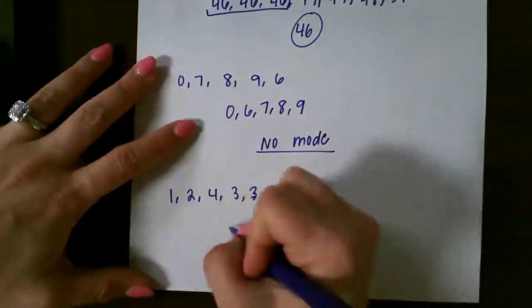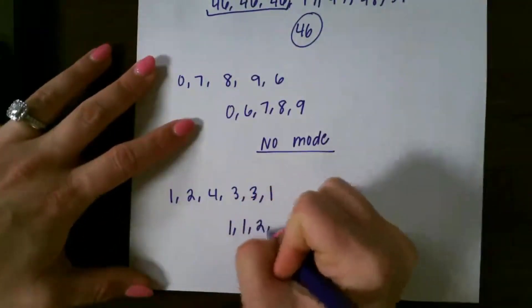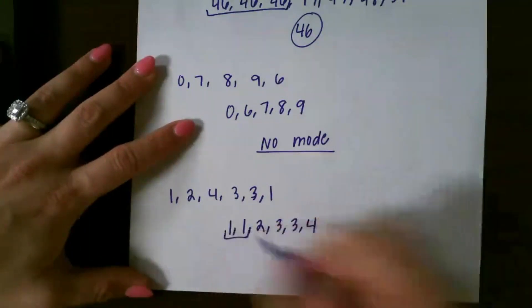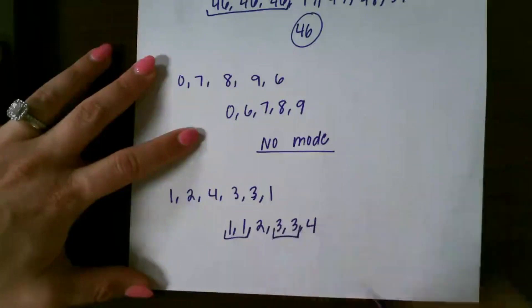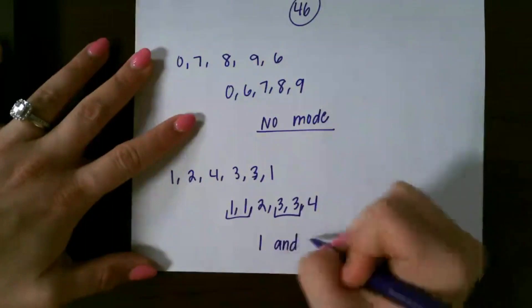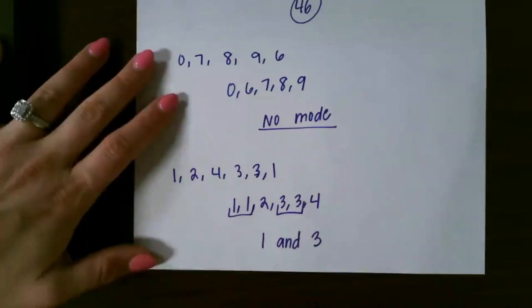And on the last one, again, least to greatest. On this one, one shows up more than once, and three shows up more than once. And they show up the same amount, so my modes would both be one and three.